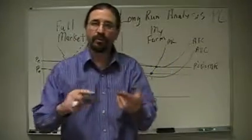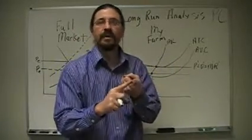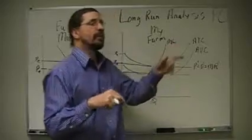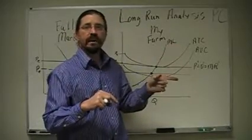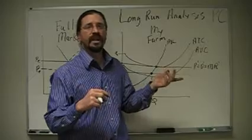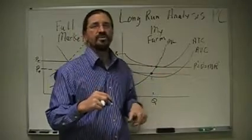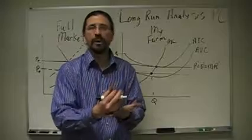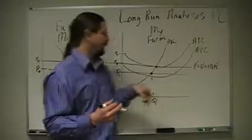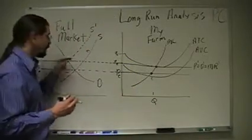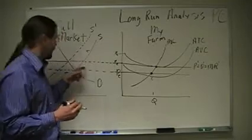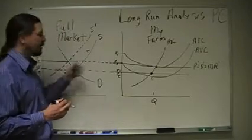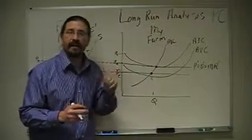Well, in perfect competition, remember, it's easy to get in and out. Imagine you're looking at your buddy who's a farmer and you see them making all this money at corn. What do you do next year? You switch from growing soybeans or wheat to growing corn. And what happens to supply? Supply grows. It shifts to the right in the overall market. And when it shifts to the right, what happens to the price? It goes back down.